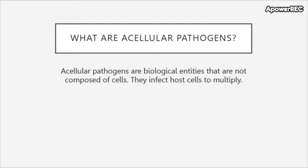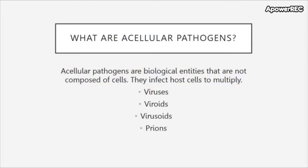Acellular pathogens include viruses; viroids, which infect plants and are smaller than viruses; virusoids, which are circular single-stranded RNAs that rely on other viruses for multiplying; and prions, which are infectious proteins.